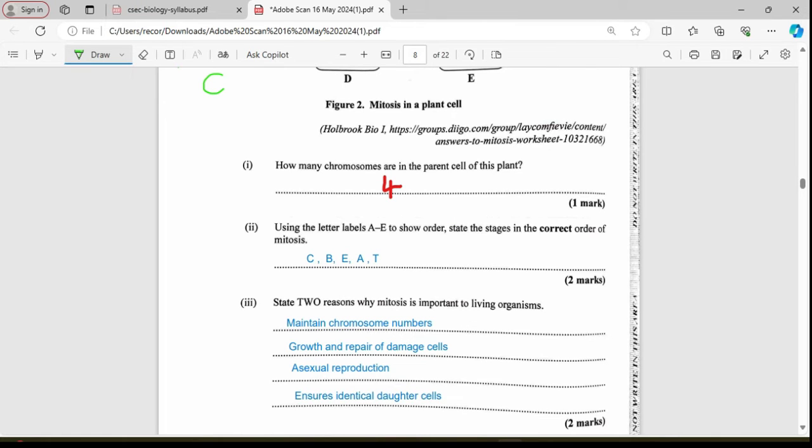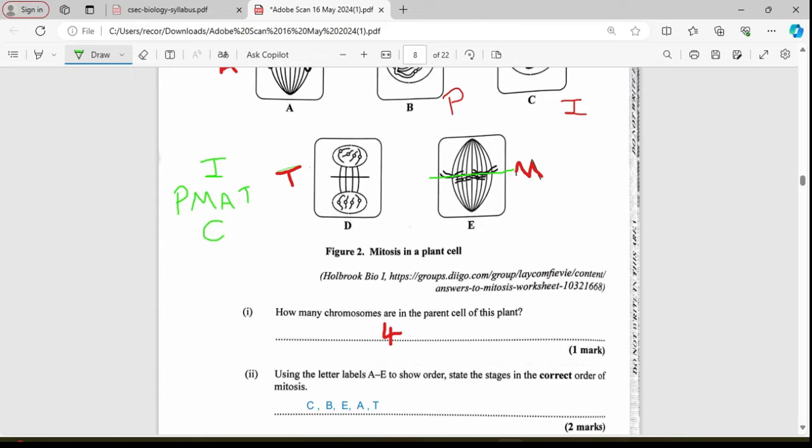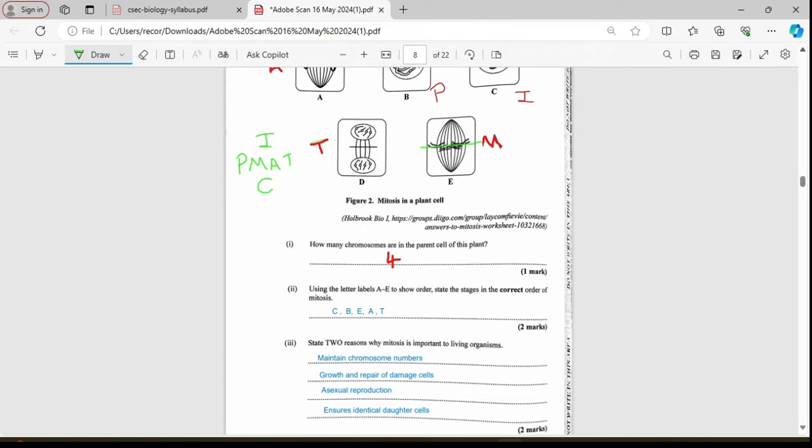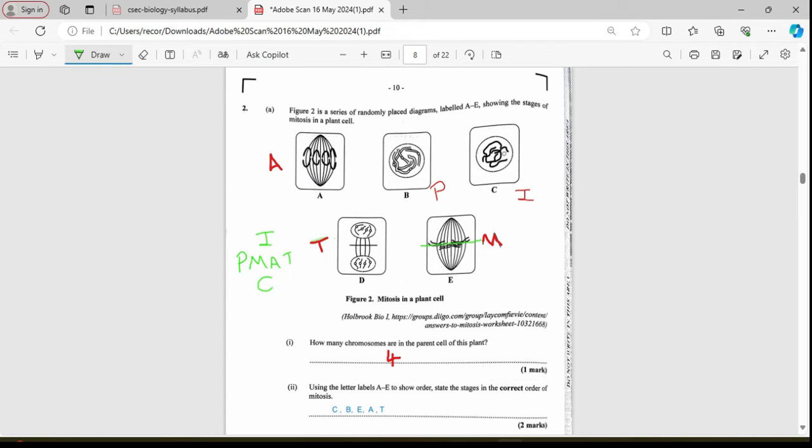Now, using the letters A to E to show the order stages in the correct order of mitosis. We would have done that just now, but I'll just go back up and show you. Remember, we did this. We looked at, using my handy-dandy formula, I look at IPMATC, and I explain what's happening here. C interphase, B is, of course, going to be prophase. And E is going to be metaphase. And A is going to be anaphase. And, of course, D is going to be telophase. So let us make sure we have it. Our letters are C, B, E, A, D. We would have earned full marks for that.